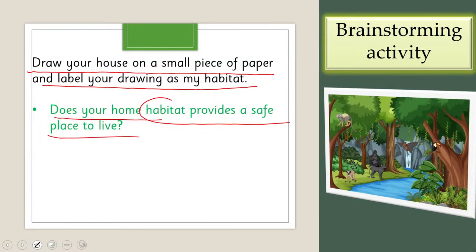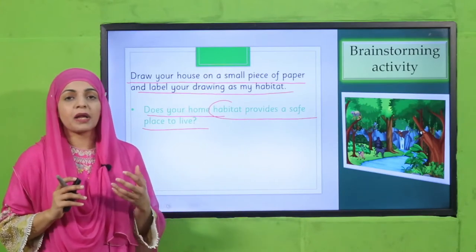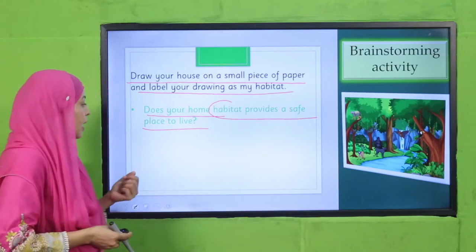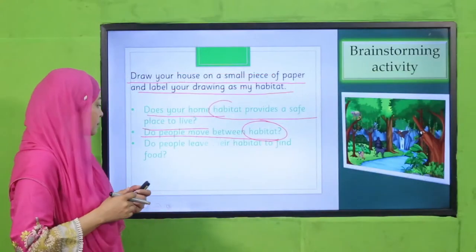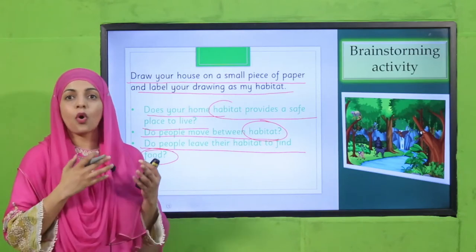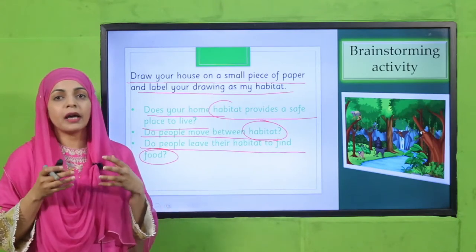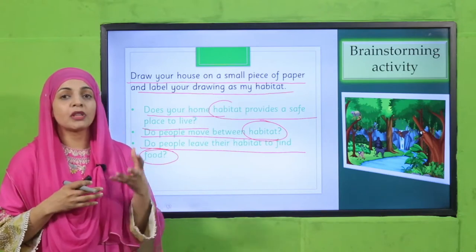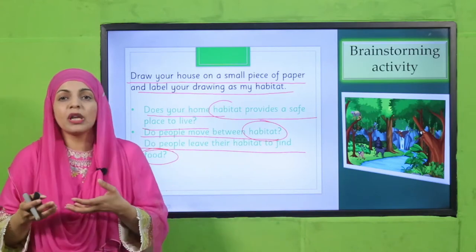Does your home habitat provide a safe place to live? Of course — we make doors and locks to keep it safe. Do people move between habitats? Yes, we move from one place to another. Do people leave their habitat to find food? Of course — on a daily basis we go out; your father goes out to earn money and purchase food from the market.